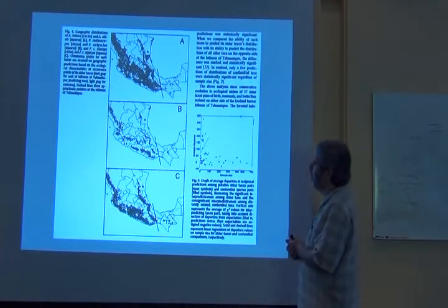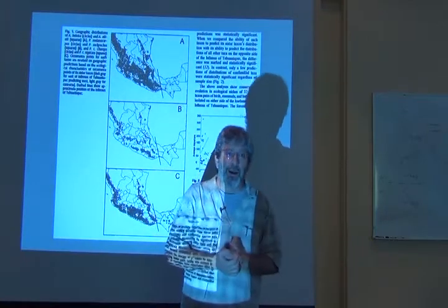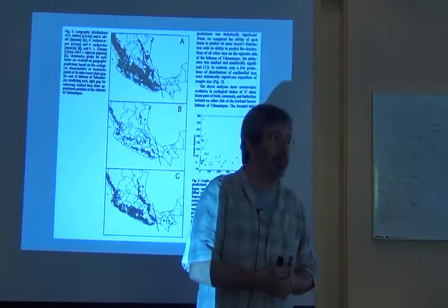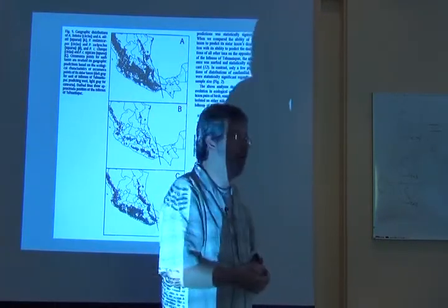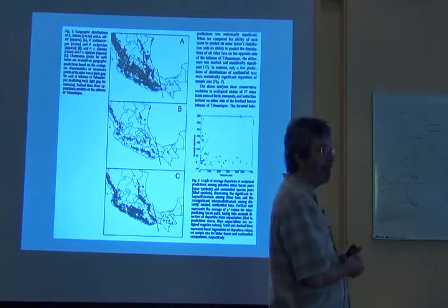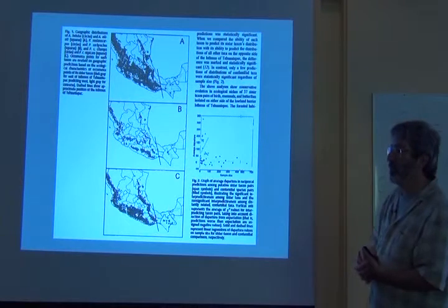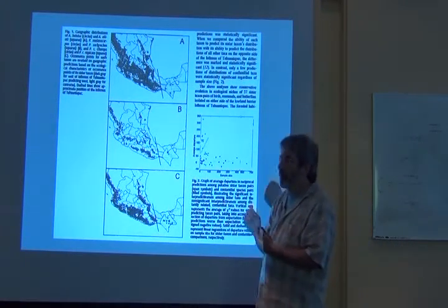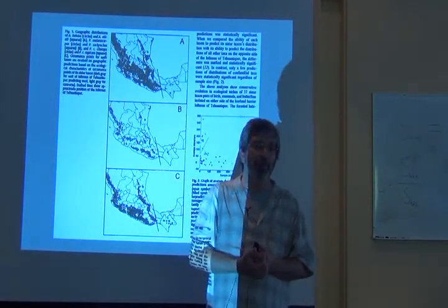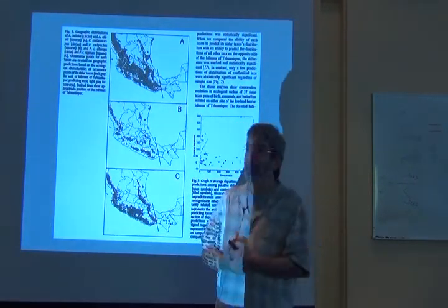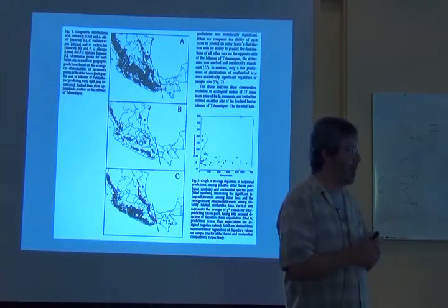Essentially what we were finding was that for 37 pairs of species, which are ostensibly each other's closest relatives, probably fairly recent speciation events, you always got this ability to predict one another. We made the very tiny little inference that we're not talking about predicting the distribution, we're talking about identifying suitable conditions.